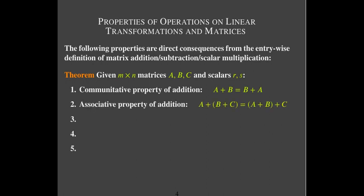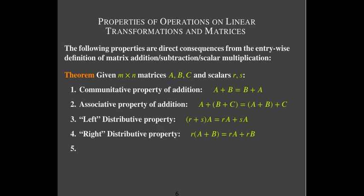We have associative properties — you can group them in any order with addition and get the same answer. We have a left distributive property for scalar multiplication: if you have a sum of scalars times matrix A, you can take each scalar multiplied times A and add those together. And there's also a distributive property for scalars over the sum of matrices.